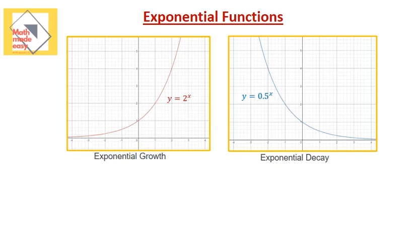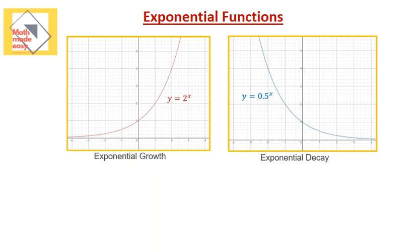We have here two models of exponential functions. The first one is an exponential growth, and the second one is an exponential decay. So this one here represents an exponential growth, and this represents an exponential decay.